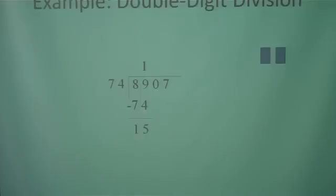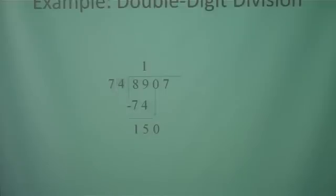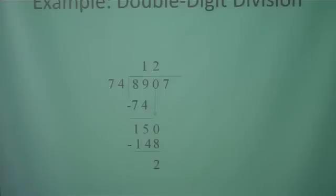Now we're going to bring down our next digit, which is 0. Now we have to find out how many times 74 can go into 150. We're going to use the cover technique again to estimate — how many times can 7 go into 15 without going over? That's going to be 2, so we're going to try 2. 2 times 4 is 8, and 2 times 7 is 14. When we subtract, we get 2. Since 2 is less than 74, we know that 2 was a very good estimate.